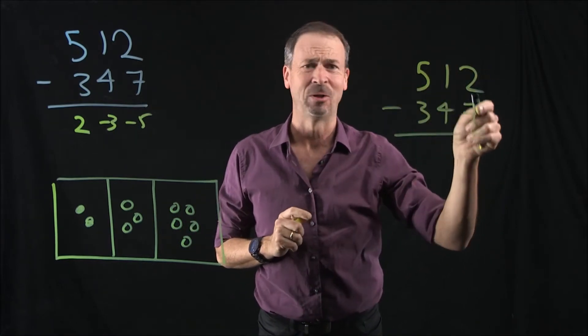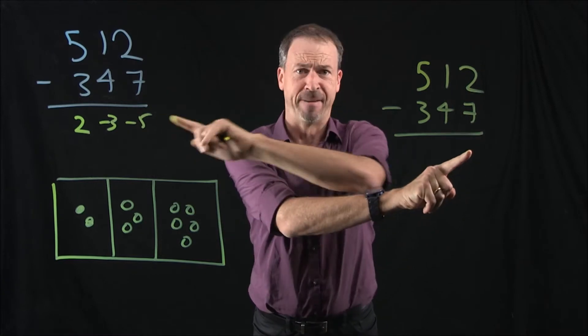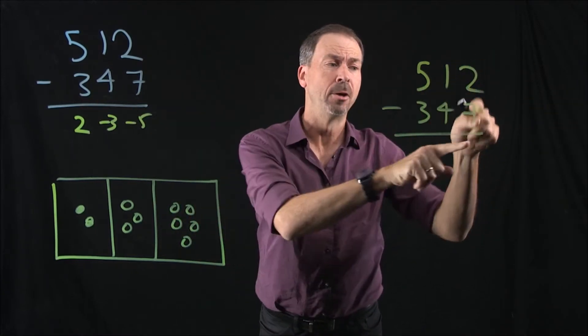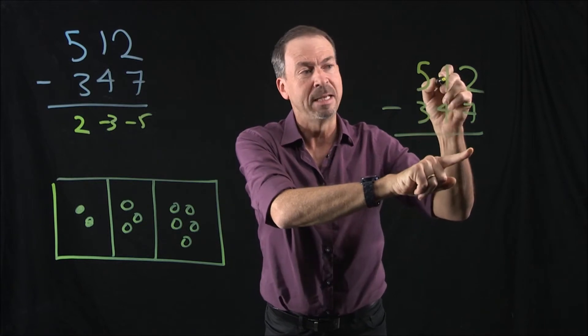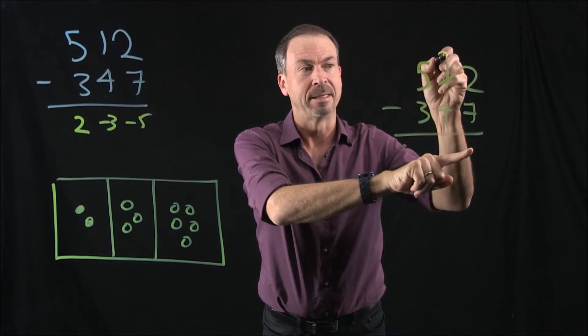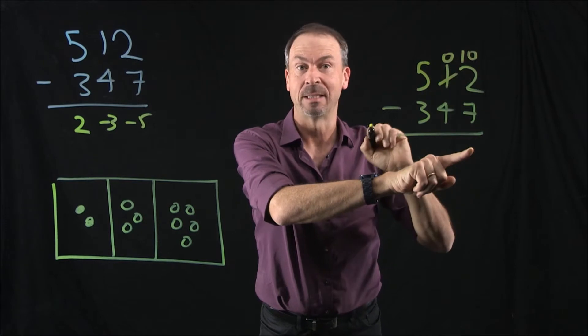You say, oh, I can't do that. I can't do 2 take away 7. Now, I want to write negative 5, and I can. You can too. But the standard algorithm says, no, no, no. What I want you to do is take one of these dots here and make it one less. Now I have zero of them. And put here an extra 10 dots there.